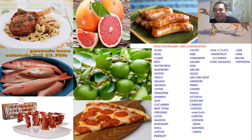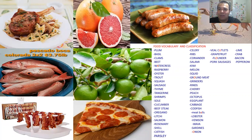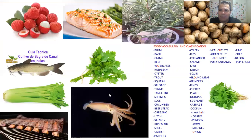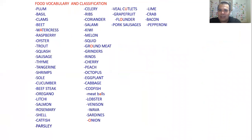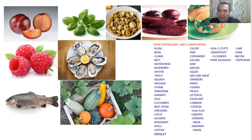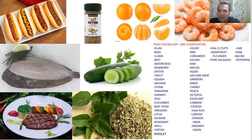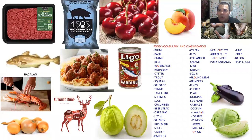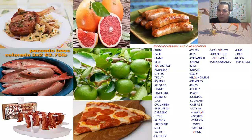So guys, basically this is the identification of the different vocabulary. You have the pictures — if you want to understand better, watch the video one more time. Remember: the title of this class is food vocabulary and classification. Step one was pronunciation, step two was identification, and step three is classification.